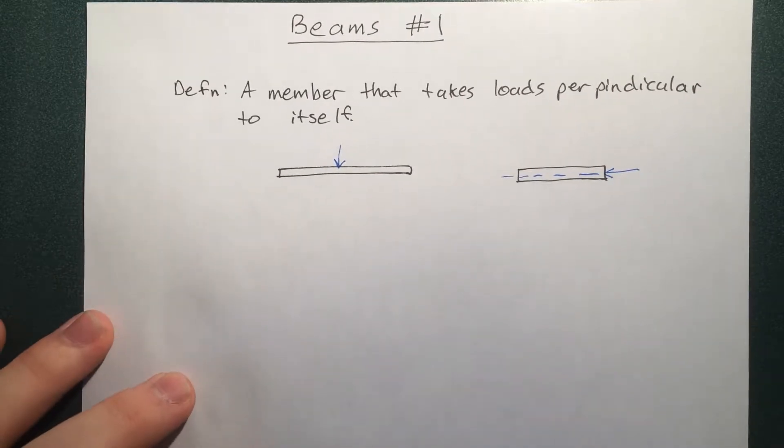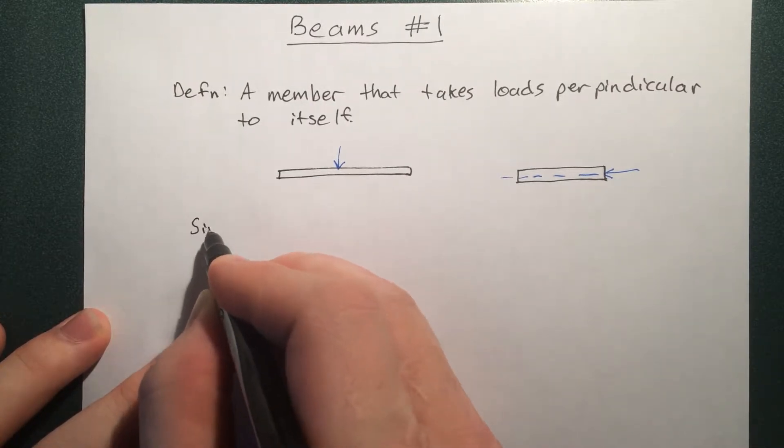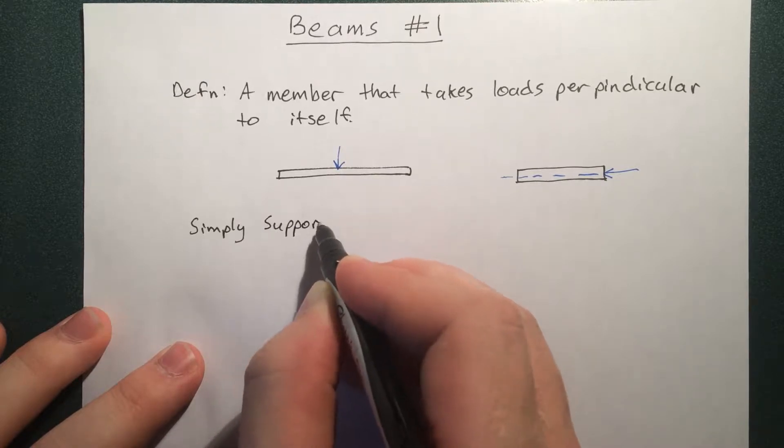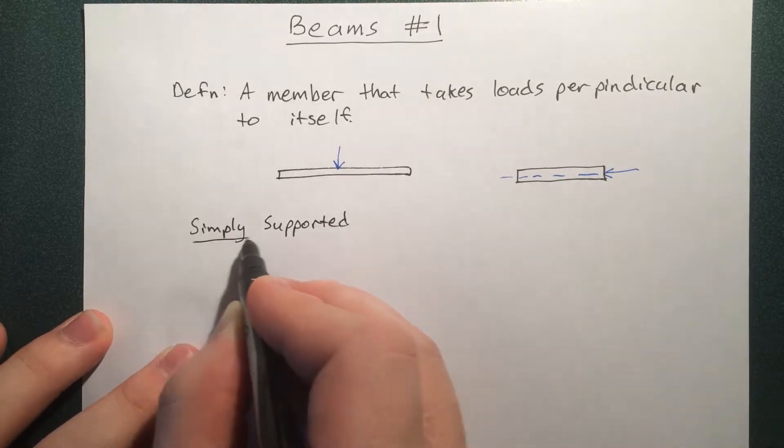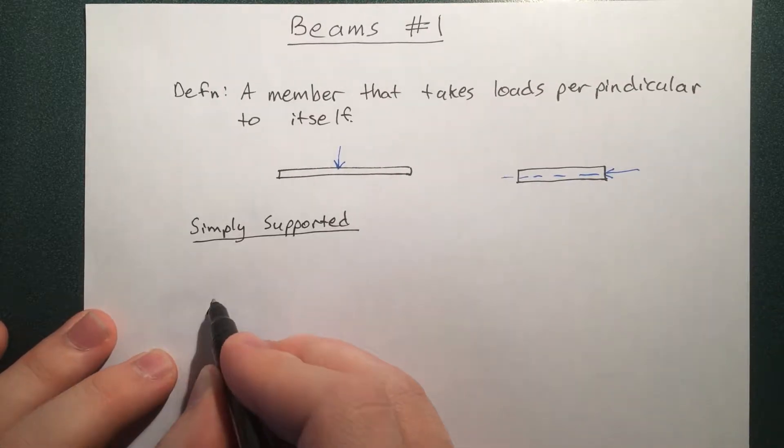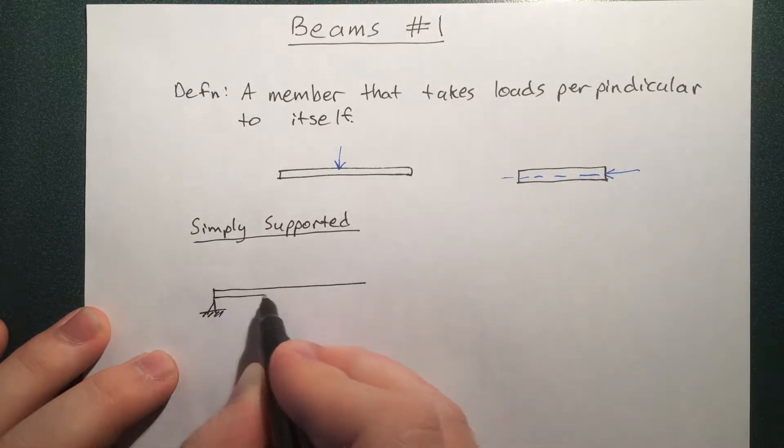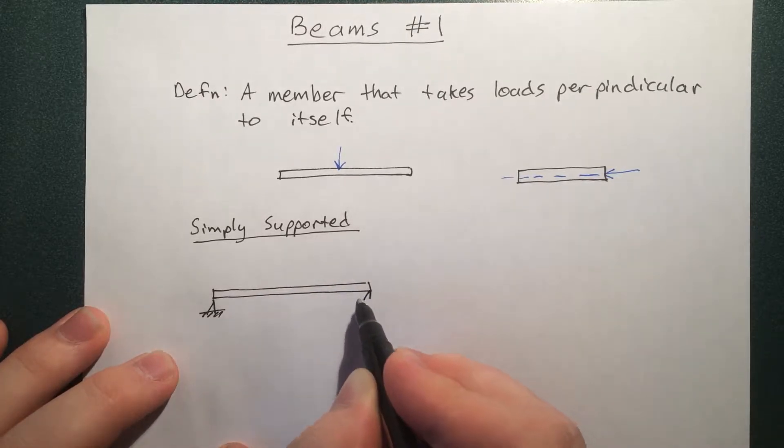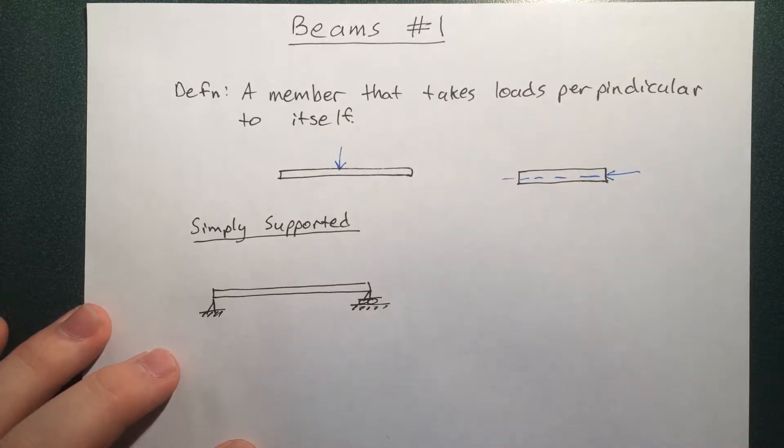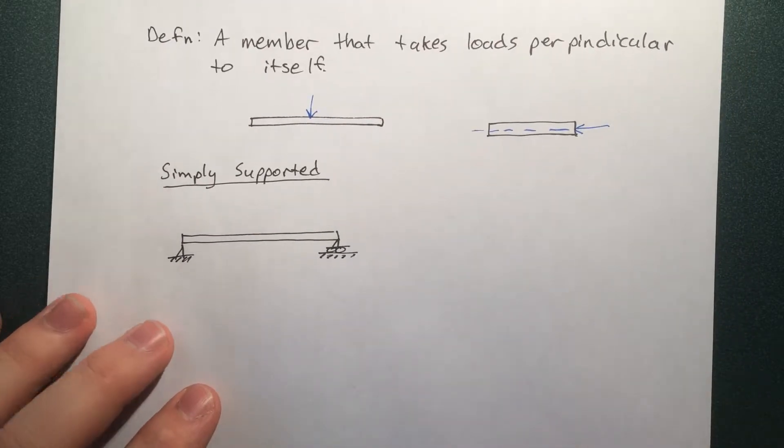So there's a few different types of beams. The first one is a simply supported beam. That beam is just like the title says, simply supported. It has one support there, it's just supported on both ends by some sort of support.